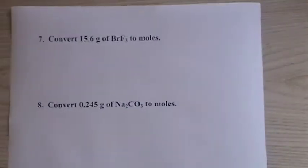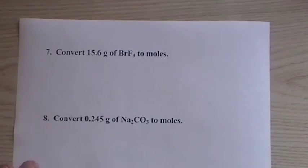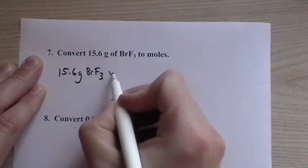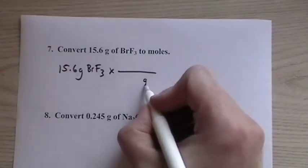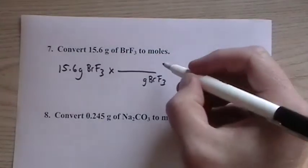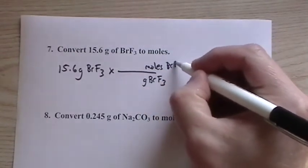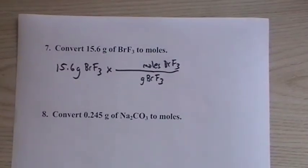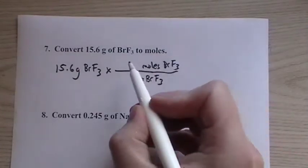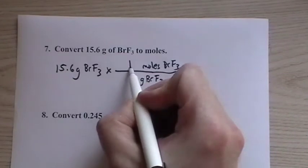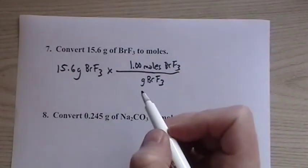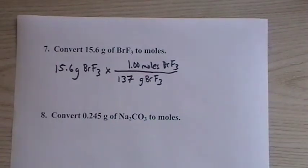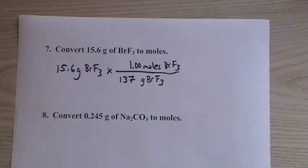Now grams to moles and moles to grams. We have 15.6 grams of bromine trifluoride BrF3. If we're going to change this to moles, we need grams of bromine trifluoride on the bottom and moles on top. If we don't have a conversion factor, we have to split it up like we've done for centimeters to nanometers, but moles of bromine trifluoride in grams - that's the molar mass. So I'll figure out the molar mass of bromine trifluoride.